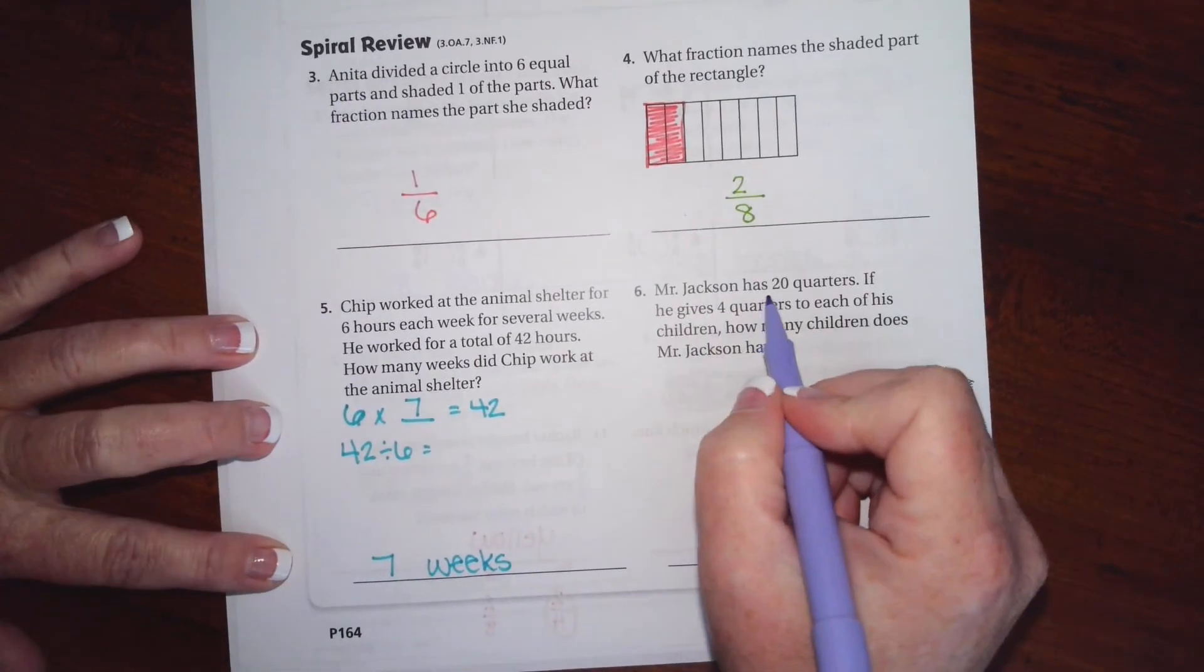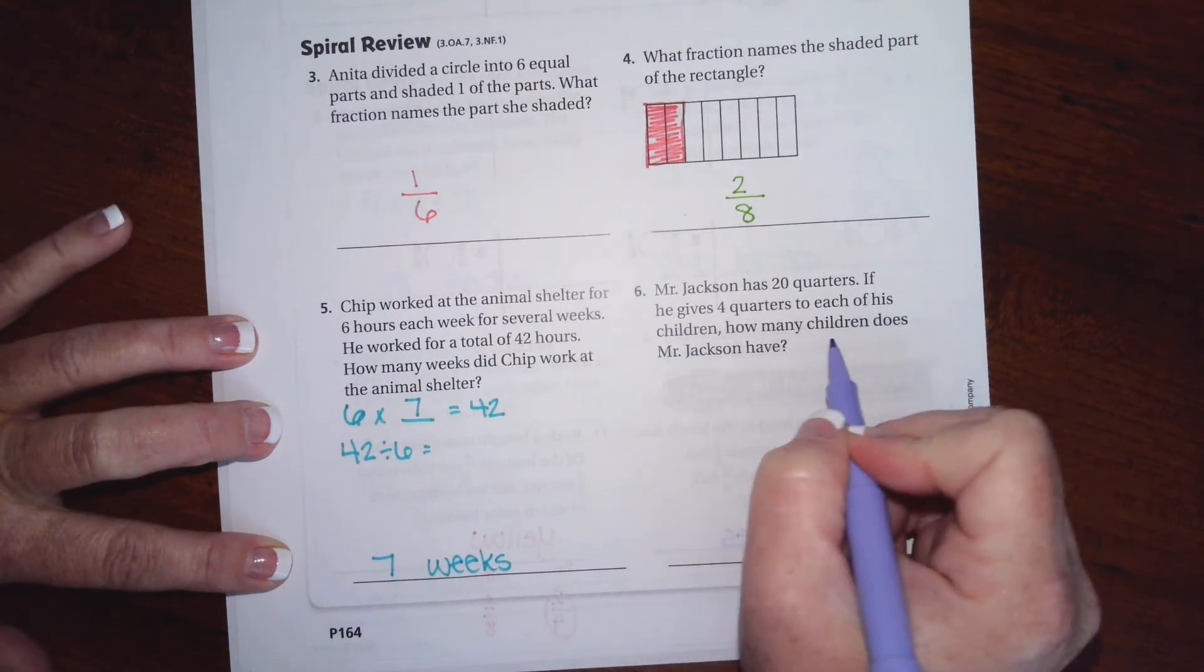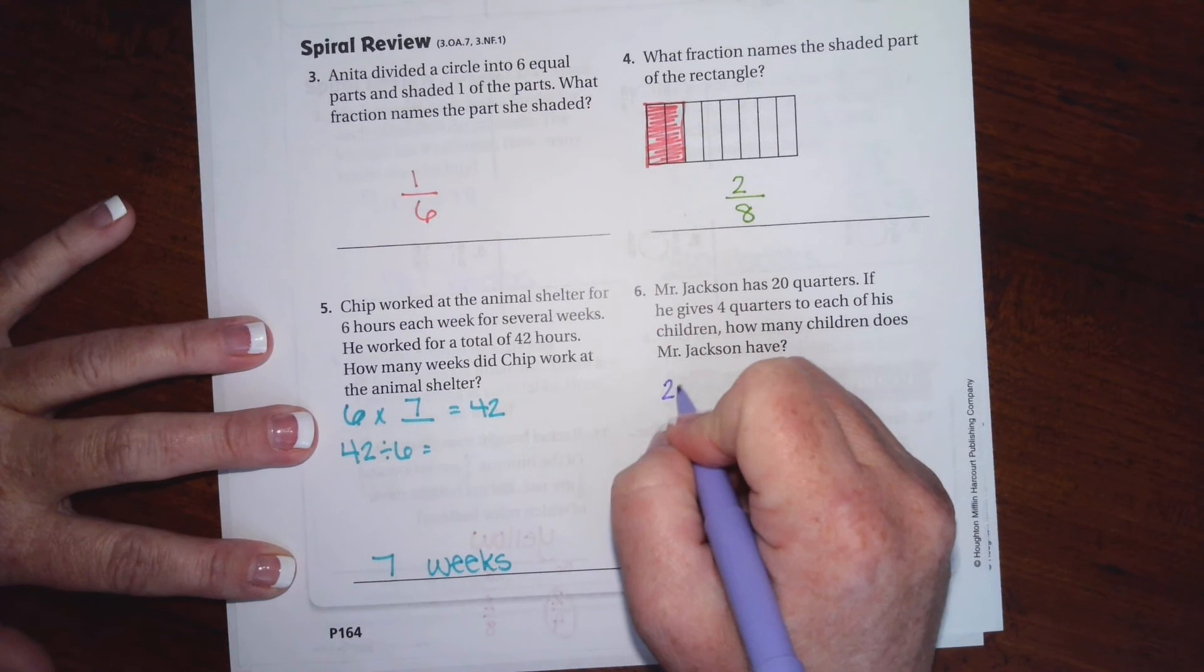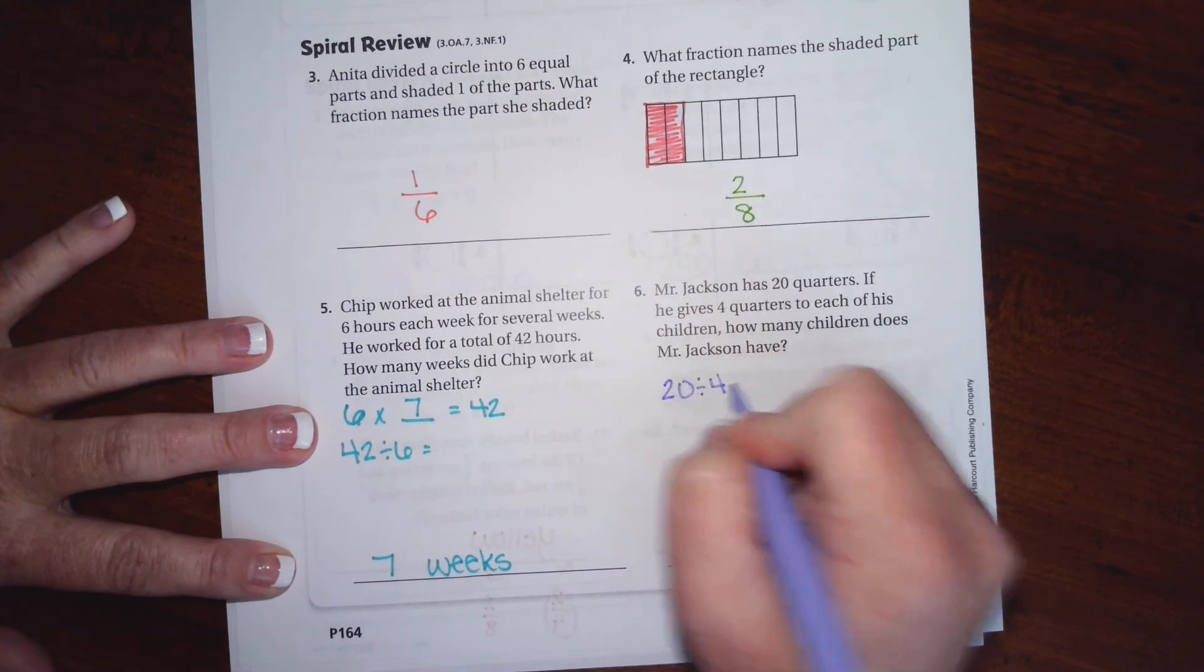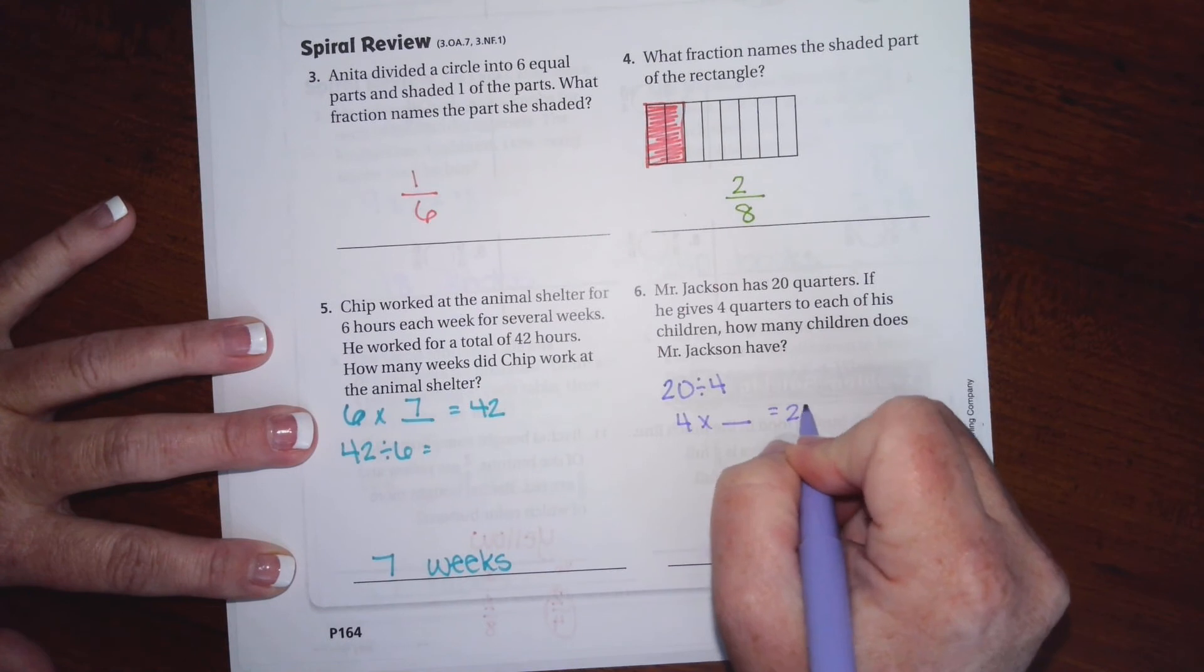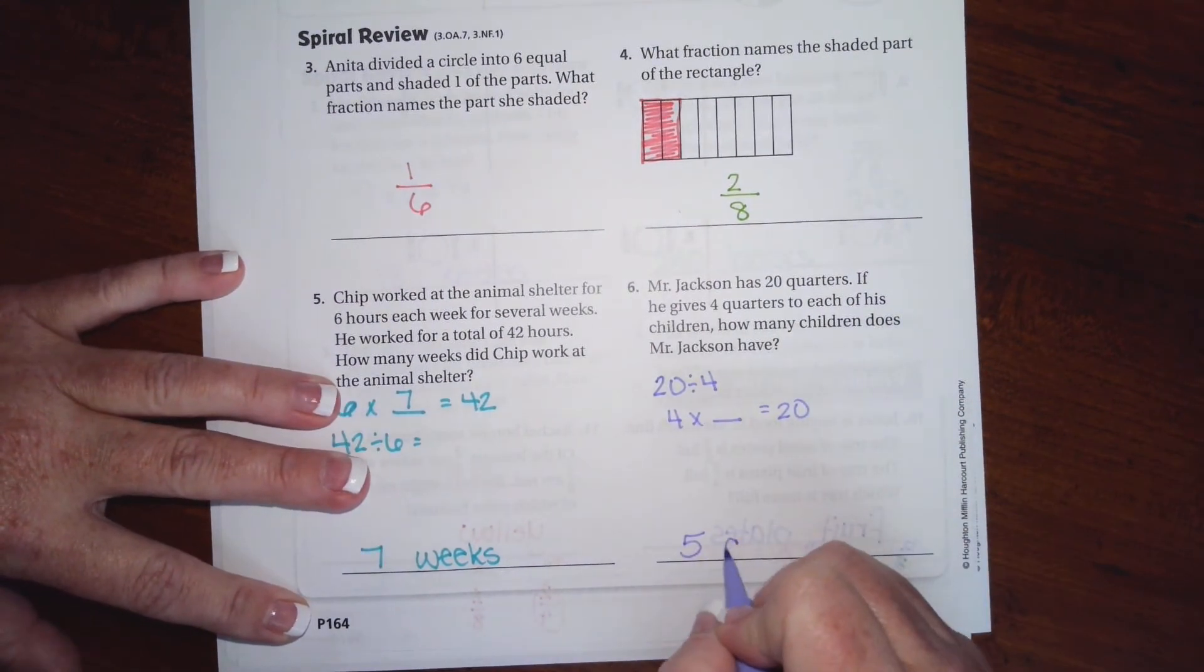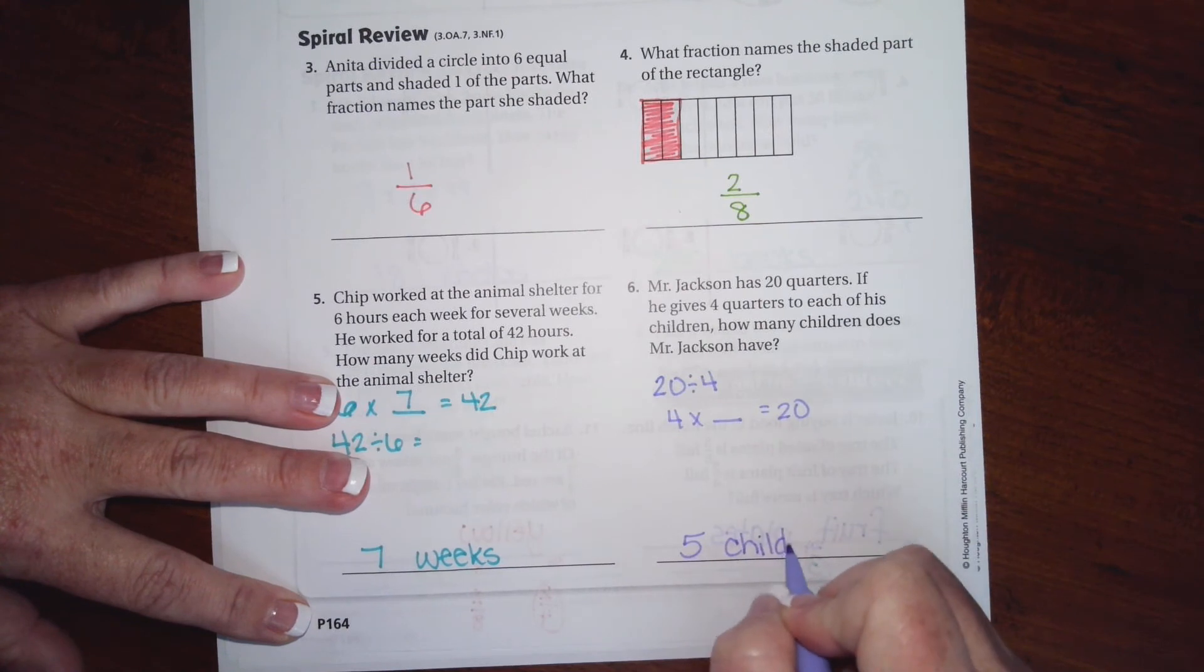Mr. Jackson has 20 quarters. If he gives four quarters to each of his children, how many children does Mr. Jackson have? We can do 20 divided by four, or we can do four times blank equals 20. Well, anybody knows that four times five is 20, so it's going to be five children. Don't forget to label.